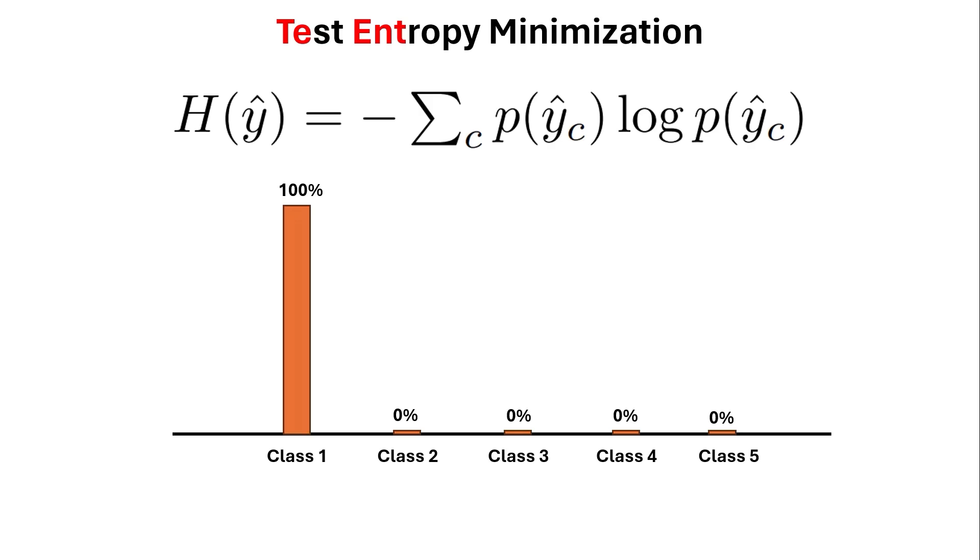But that's not what we want because that simply says that regardless of what input that I receive, I always classify it as class 1, which minimize the entropy. That's not what we want. So to tackle this issue, they say we need to optimize it based on the batch of data.